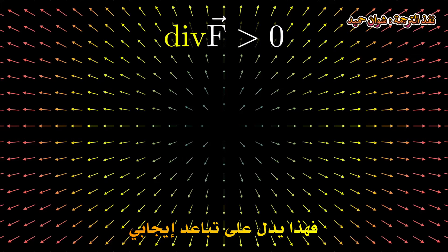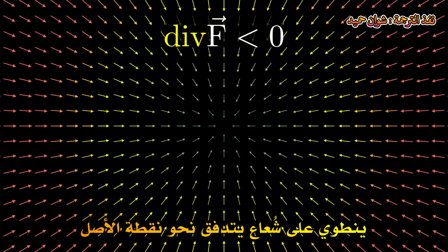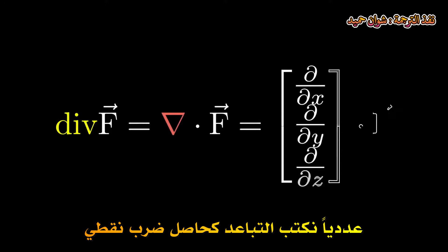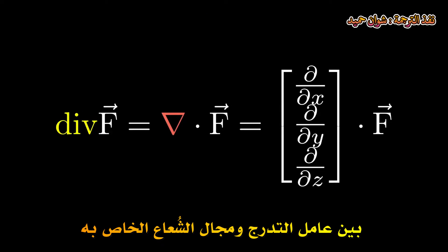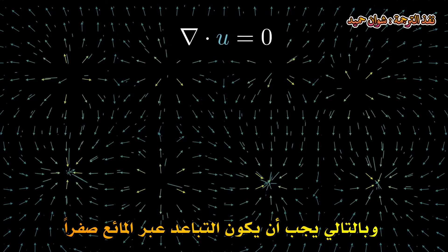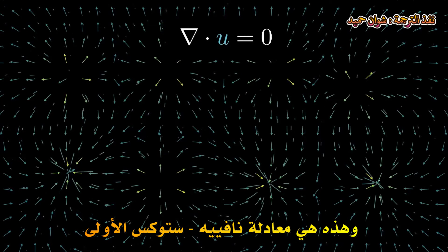Consider this vector field — it appears that vectors seem to be moving away from the origin. This indicates positive divergence. Similarly, this vector field seems to have vectors that flow into the origin, indicating negative divergence. Numerically, we write the divergence as a dot product between the gradient vector and its vector field. In terms of fluids, the divergence of a vector field indicates how much or how little a point acts as a source of a fluid. If we imagine water in some area, it's impossible for the water to simply disappear. Mass is never destroyed, and thus the divergence across the fluid has to be zero — and hence the first Navier-Stokes equation.